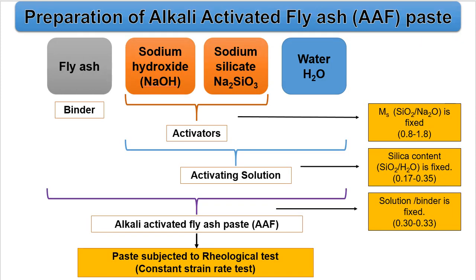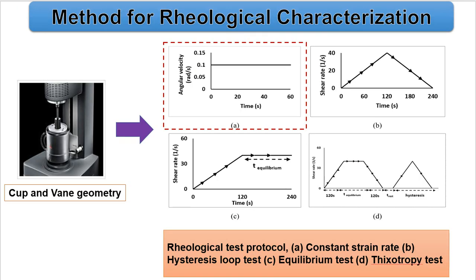Understanding the rheological properties of alkali activated fly ash paste helps us to increase its potential usage. In this regard, we have identified three controllables for the paste system to control its rheological properties: silica modulus, silica content, and solution-to-binder ratio. The paste once prepared is subjected to the following protocols in order to understand the rheological properties. In this study, we are going to focus on the constant strain rate test, using a strain-controlled rheometer with cup-and-vane geometry to understand the rheological properties of the paste.